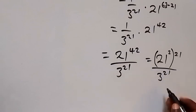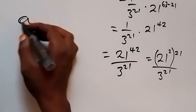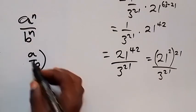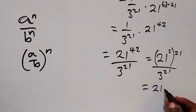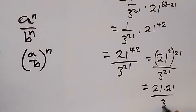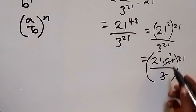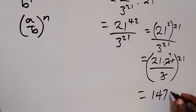Then divide by 3 raised to power 21. Now, applying the law of indices — when we have the same power, a raised to power n divided by b raised to power n, we can bring it together and have (a over b) raised to power n. So here we are going to have 21 squared — that's 21 times 21 — over 3, all raised to power 21. When we simplify, 3 goes into 21 giving 7, and 21 times 7 gives us 147. So we have 147 raised to power 21. And here we have the solution to the problem.